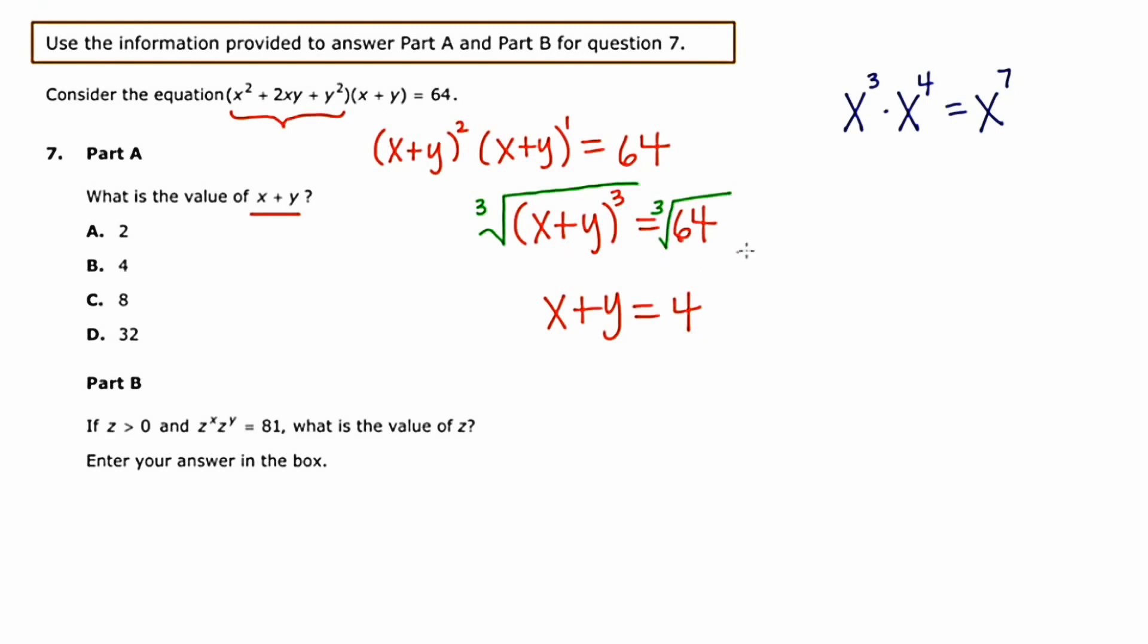So x plus y is equal to 4. And this is multiple choice, and it's one of the answer choices. So that's going to be choice B.